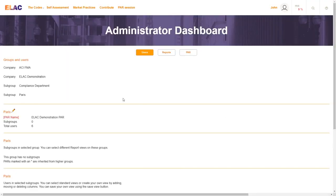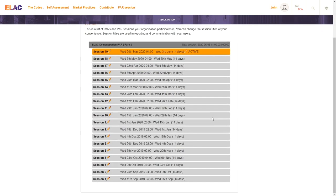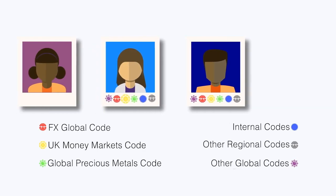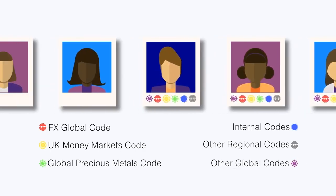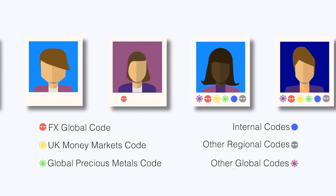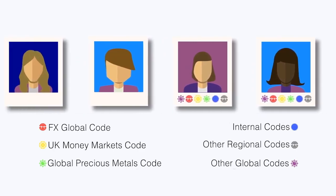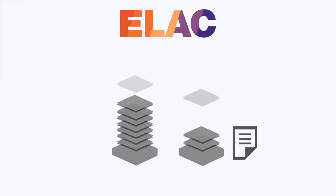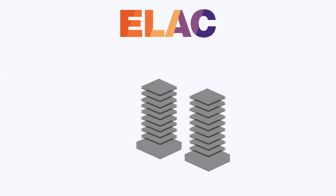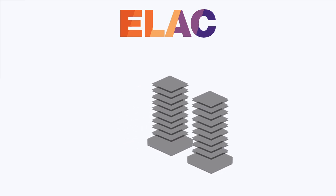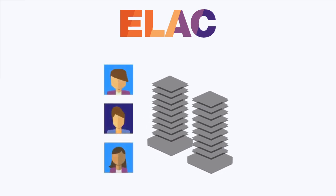Our Management Information System provides evidence that all staff have been trained and understand their requirements. ELAC contains all the important codes and rules of conduct, with content being automatically updated on a continuous basis. As good market practices and conduct requirements evolve over time, ELAC remains up-to-date and so will you.